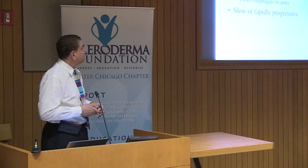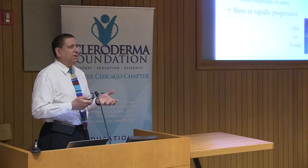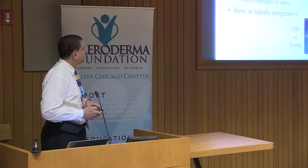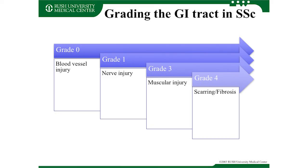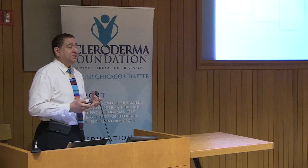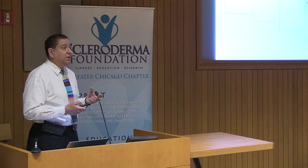GI involvement can be very slow or rapidly progressive. We don't have clear ideas why it moves quickly in some people and over decades in others. When you have just blood vessel injury, you won't see much damage on endoscopy or x-ray and may have few symptoms. As you progress through grades, you get nerve injury causing motility problems, then muscular injury causing distension and stasis, and finally grade four with scarring can cause actual obstruction of the esophagus or small bowel.